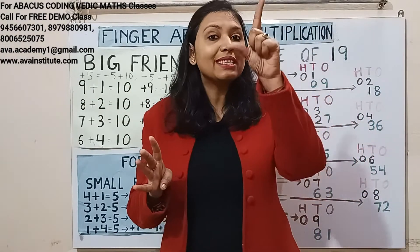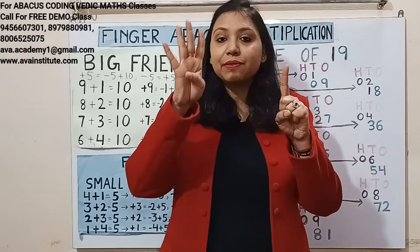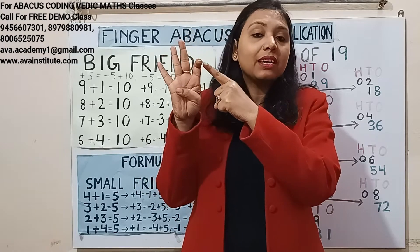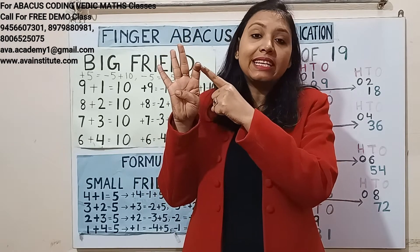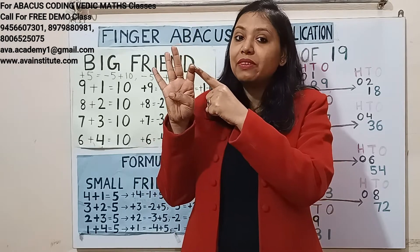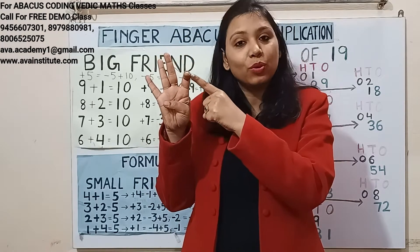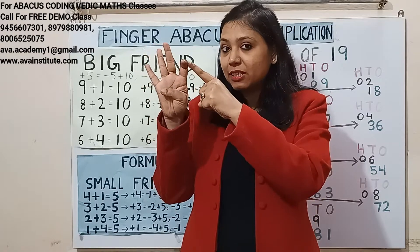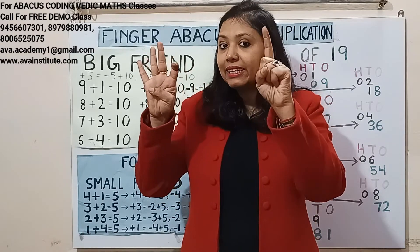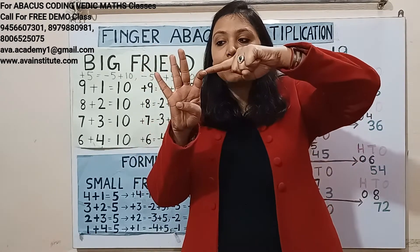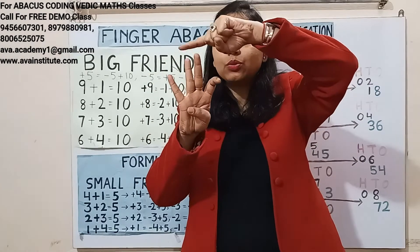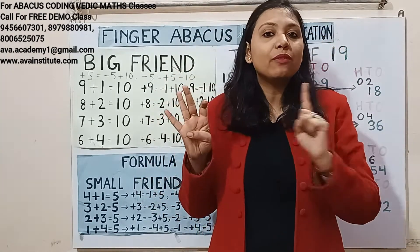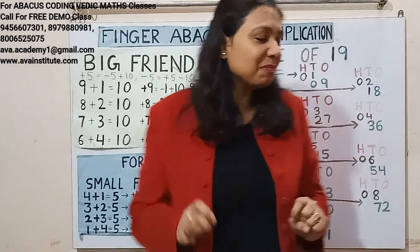So plus 50 formula is minus 50 plus 100. If we bend this finger half, then this finger will represent 100 and 1 both. So in hundreds place it's 1, in tens place it's 1, and in ones place: 1, 2, 3, 4. So the answer is 114.